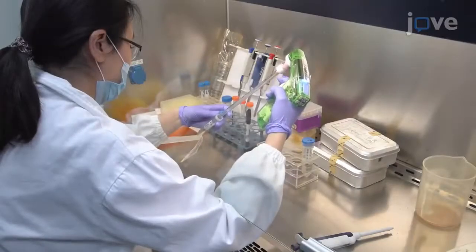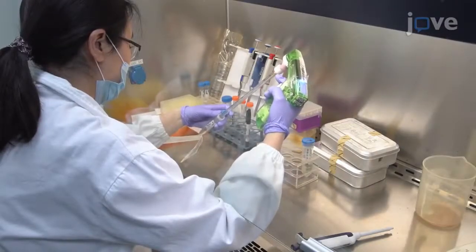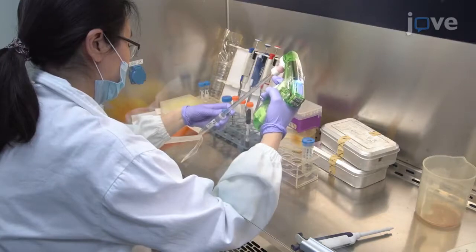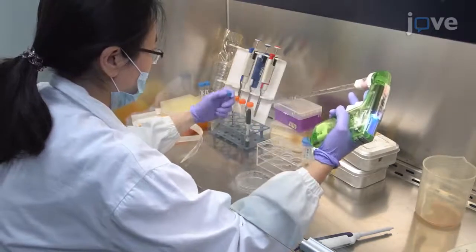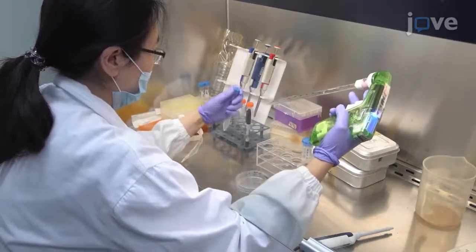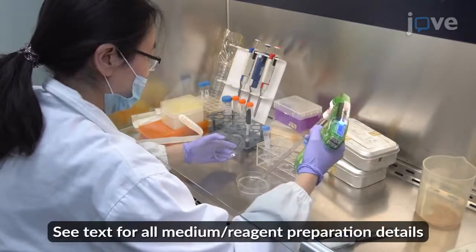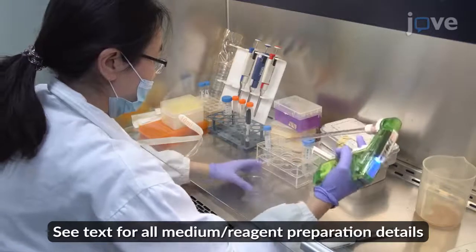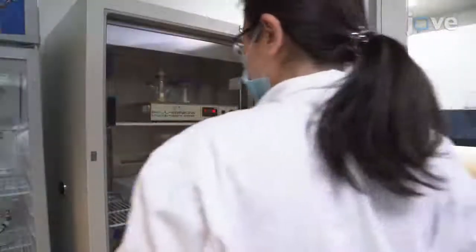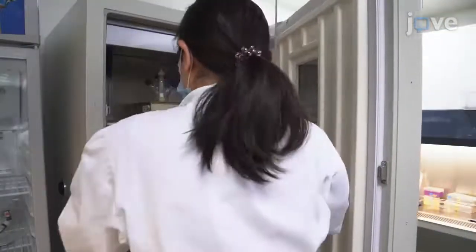Begin by growing 1 x 10⁷ viable S2 star cells per milliliter as a loose, semi-adherent monolayer in a 10 cm cell culture dish with 10 mL of complete Schneider's Drosophila medium, without additional carbon dioxide, at 25°C for 1 hour.